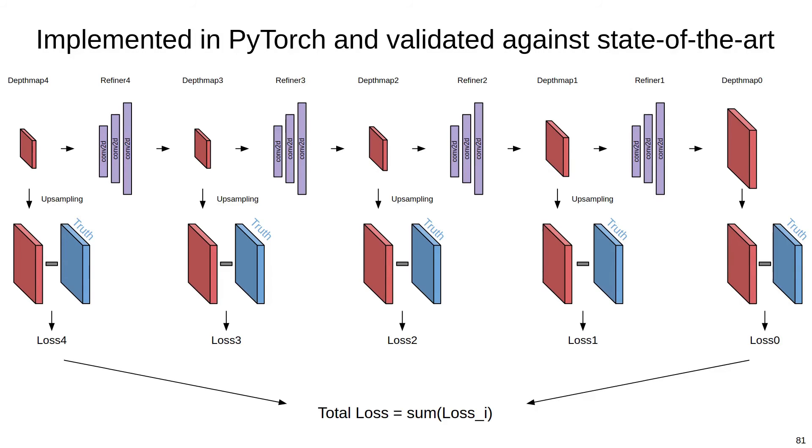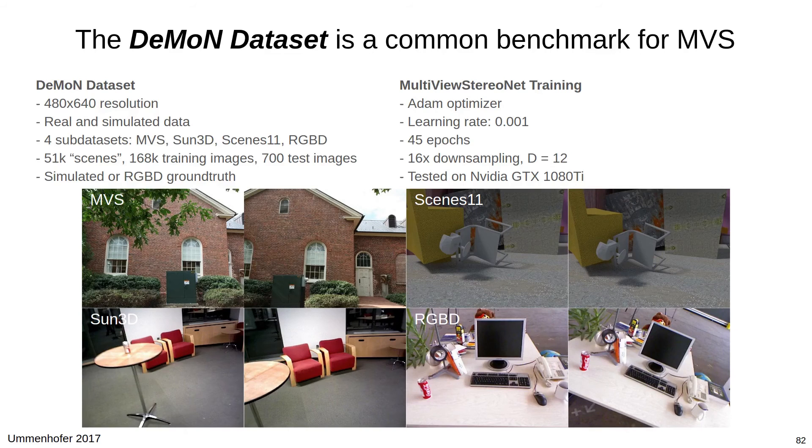We implemented our method in PyTorch and validated it against several state-of-the-art algorithms. Our first comparison used the Daemon dataset, which is a common benchmark for MVS. It's composed of VGA images from four sub-datasets shown here. There are 51,000 scenes in the dataset, which translates into around 170,000 training images and around 700 test images. Ground truth is provided either through simulation or from RGB-D sensors.